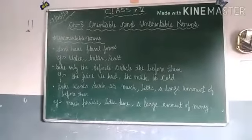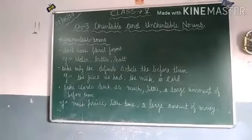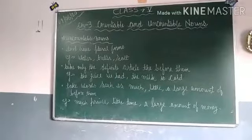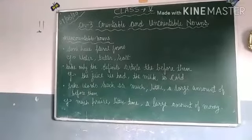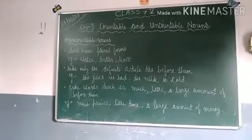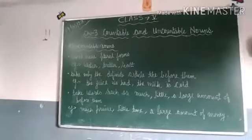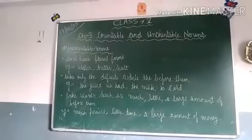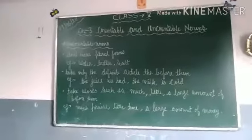Now the second one is uncountable nouns. Uncountable nouns hote hain jise hum count nahin kar sakte, jise hum gin nahin sakte. So they don't have plural forms — uncountable nouns jo hote hain, they don't have plural forms; they are in singular forms. Examples: water, butter, salt.